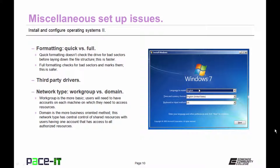You need to be aware that when setting up a system you may need to have third-party drivers on hand for any hardware installed in the machine. There is also the type of network setup you're going to have — either workgroup or domain. The workgroup is the most basic; users will need to have accounts on each machine where they need resources shared. A domain is more of a business-oriented method, where there is central control of shared resources and a user has one account that grants access to all authorized resources.